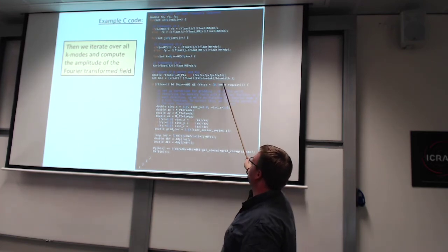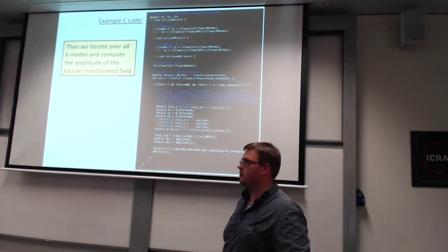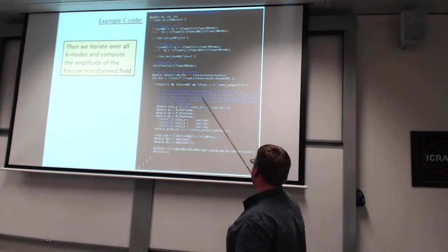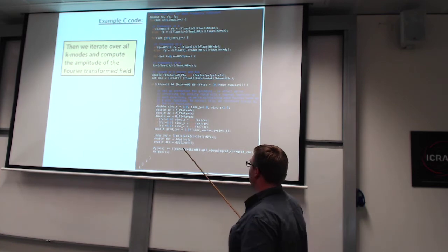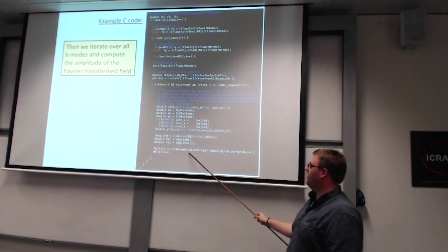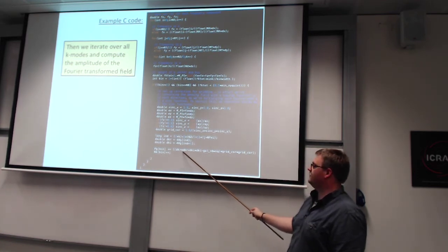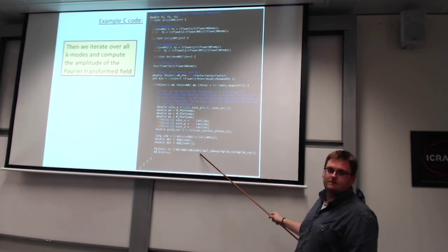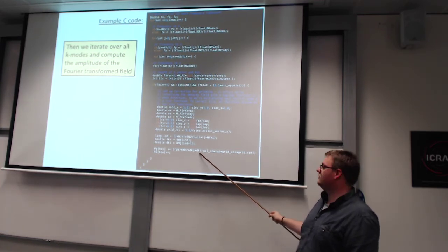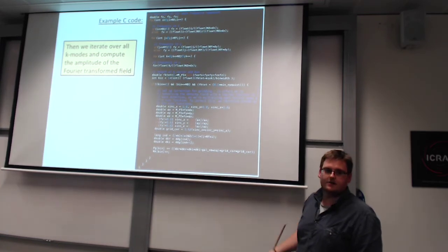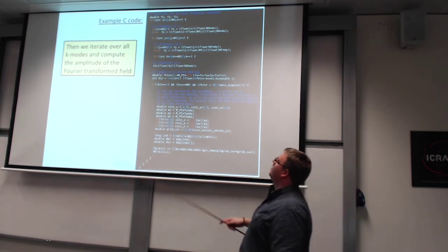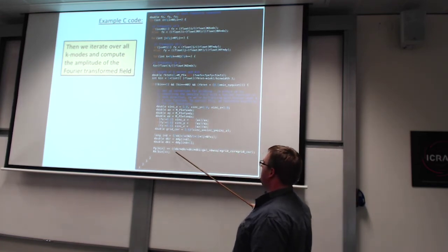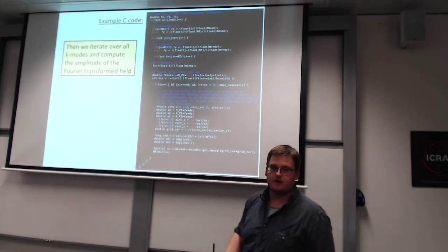Fundamentally what you do is take the real part of your Fourier transform density field, square it, take the imaginary part, square it, and add the two together. When computing the power spectrum, there are quite a few caveats: you have a Nyquist frequency, shot noise, a gridding effect from whichever assignment scheme you used, aliasing, and a window function — I'll come on to all of these.